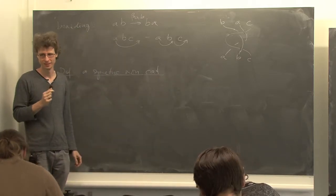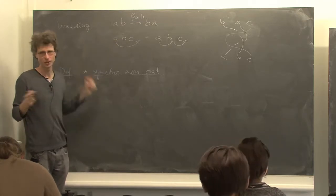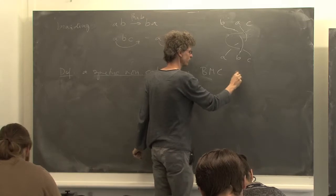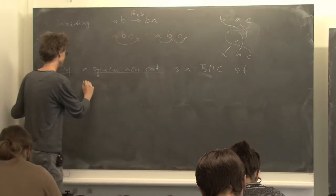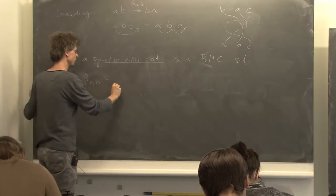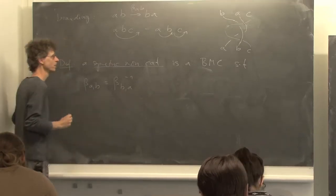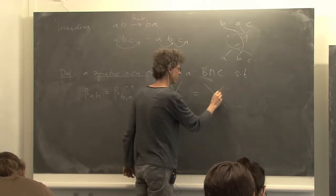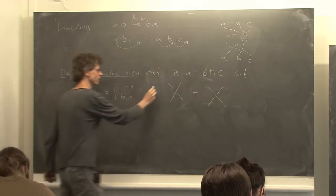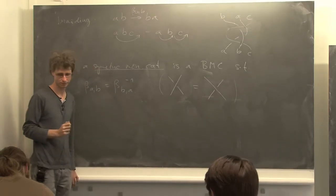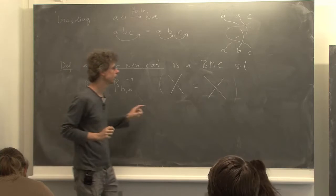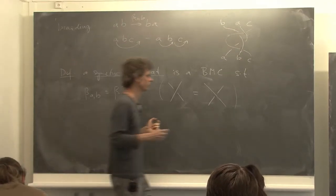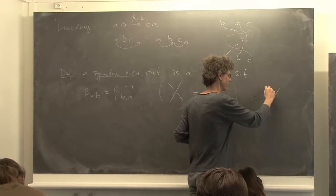A symmetric monoidal category is a braided monoidal category where going over or under is the same thing. It is a braided monoidal category such that beta_{AB} is the same as beta_{BA} inverse. In other words, this crossing is equal to that one — the over-crossing equals the under-crossing.